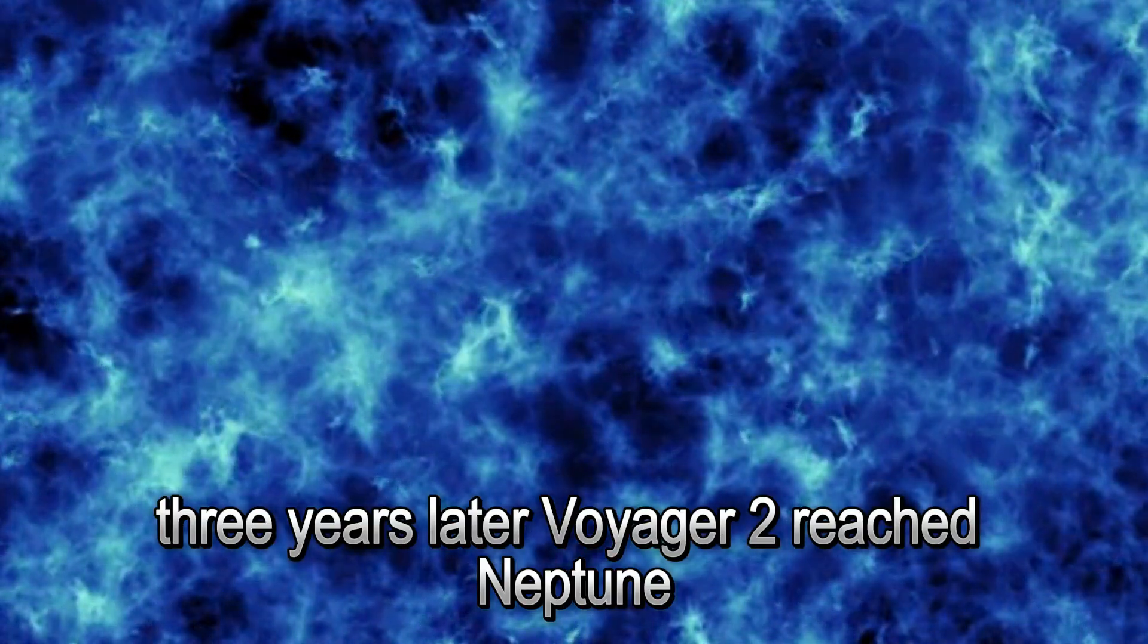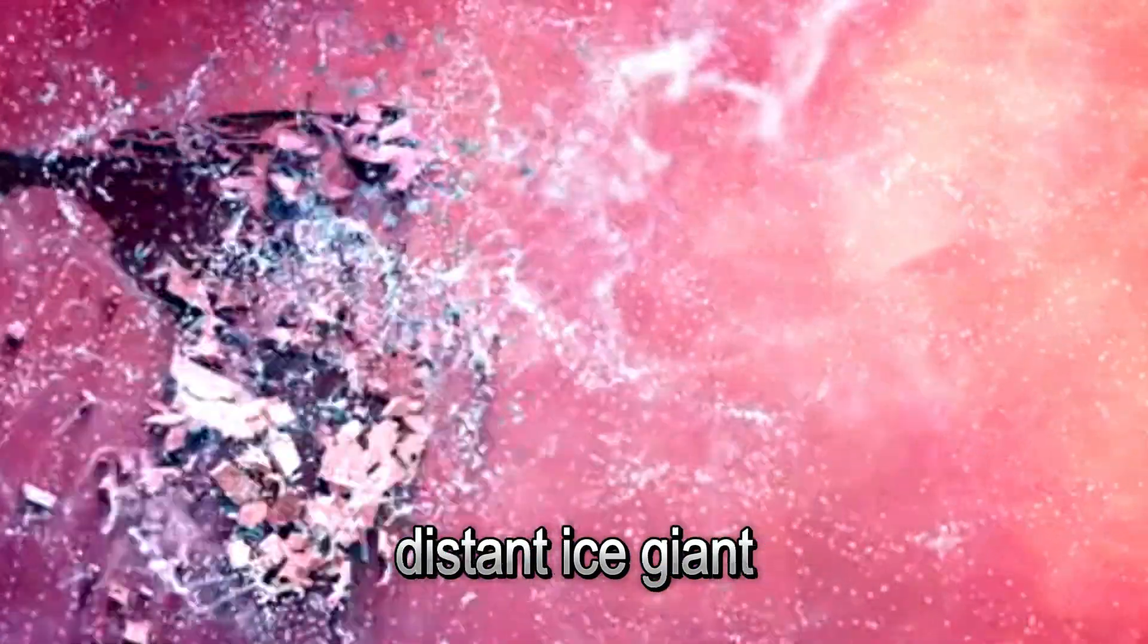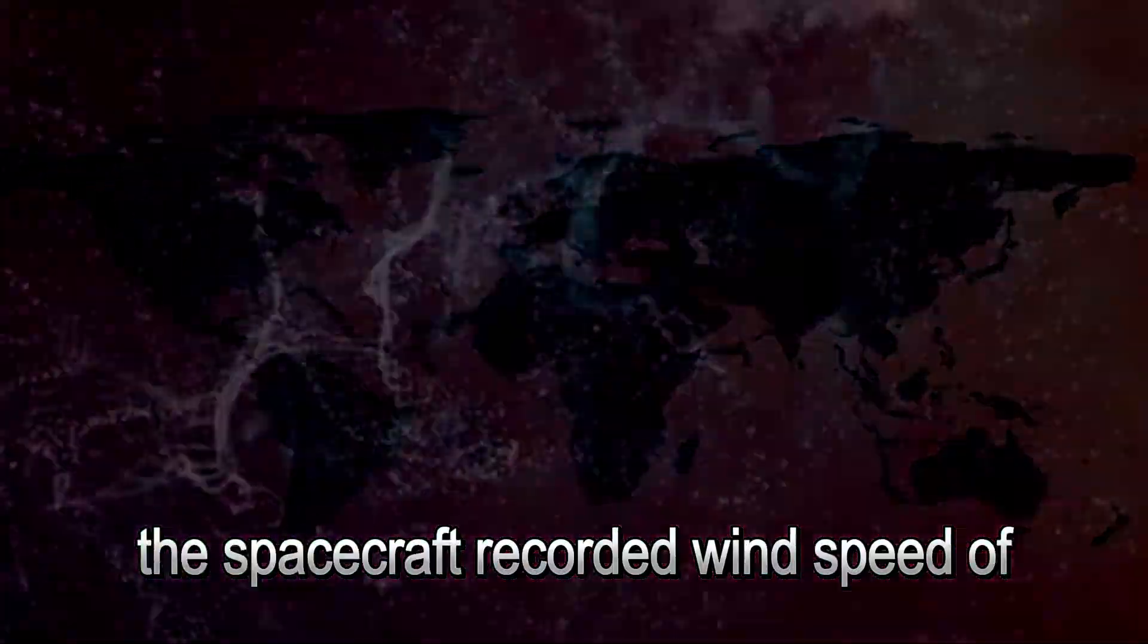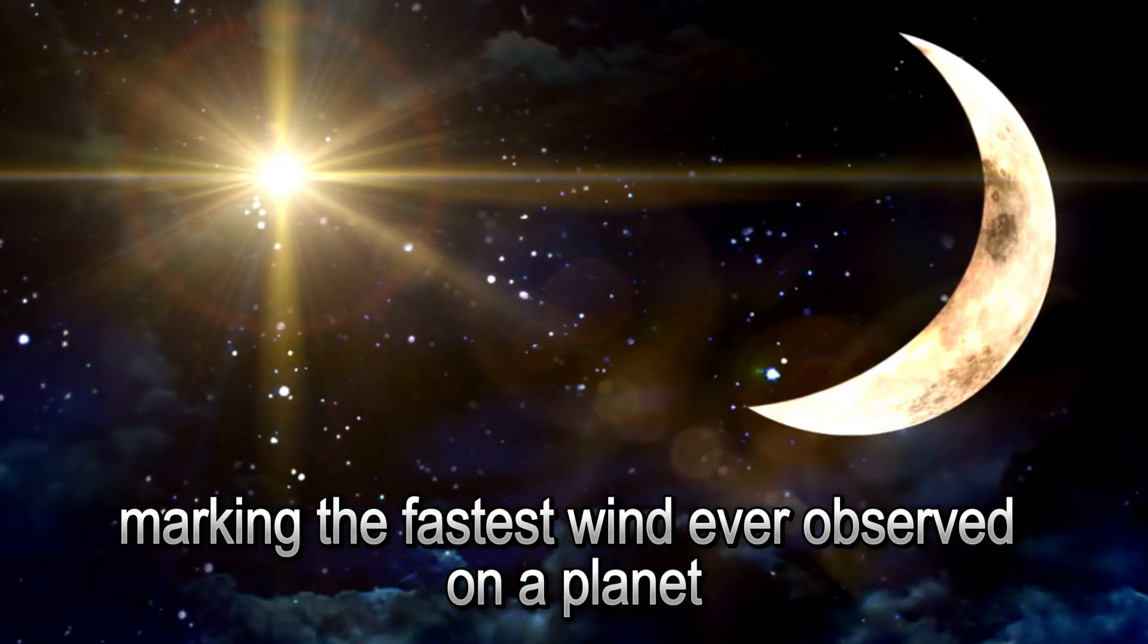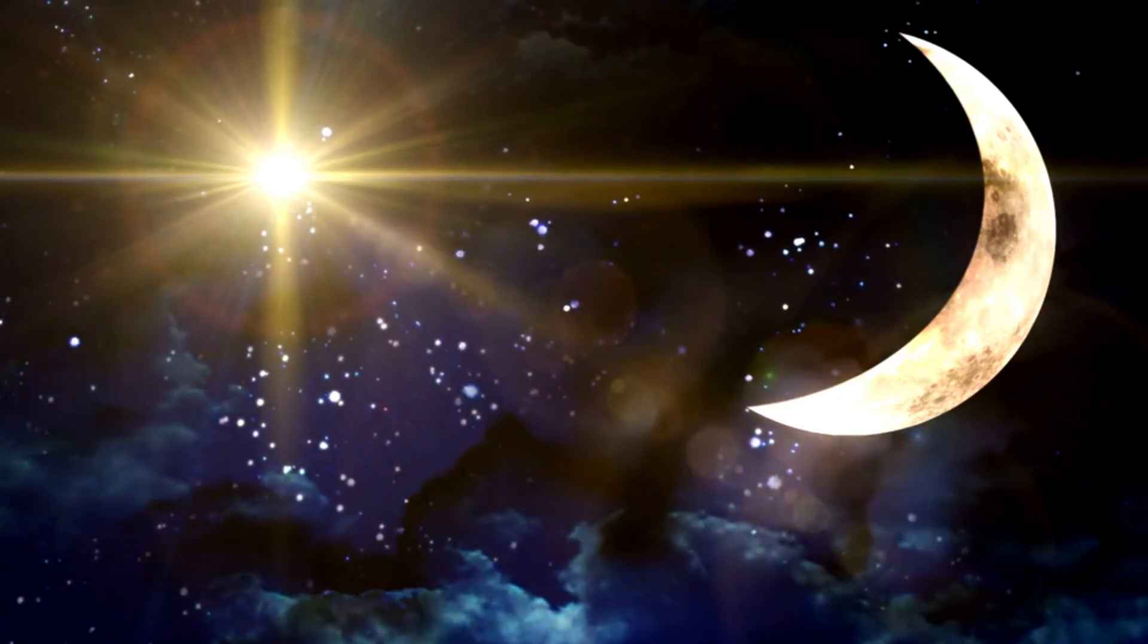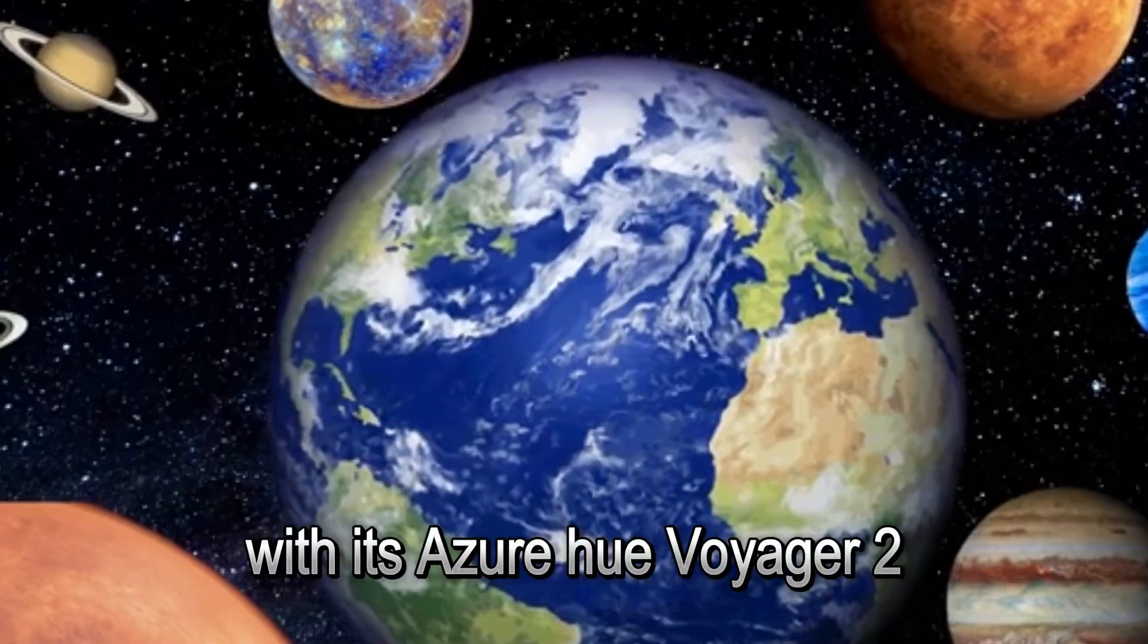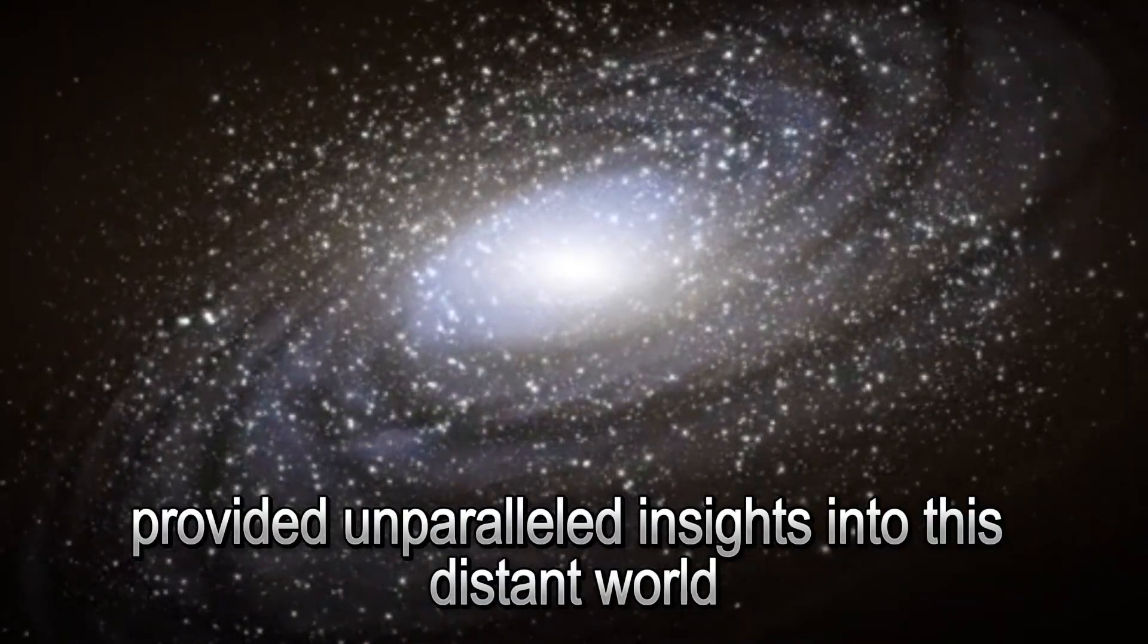Three years later, Voyager 2 reached Neptune, revealing the extraordinary characteristics of this distant ice giant. During its encounter with Neptune, the spacecraft recorded wind speeds of up to 1,000 miles per hour, marking the fastest wind ever observed on a planet within our solar system. By zooming within 2,980 miles of Neptune's methane atmosphere with its azure hue, Voyager 2 provided unparalleled insights into this distant world.